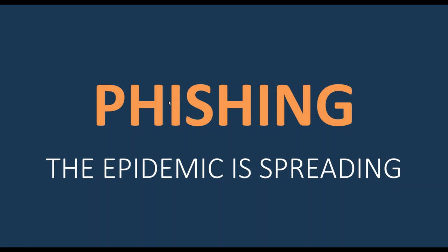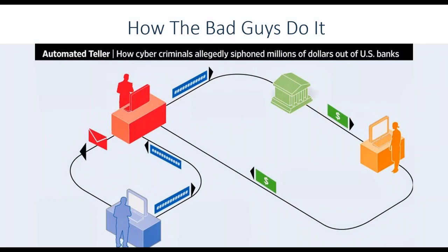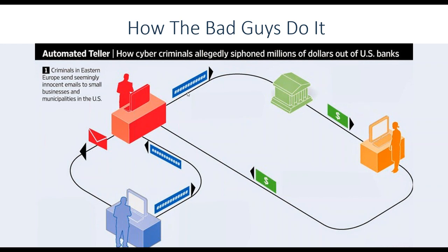Phishing is a constantly spreading epidemic. Here's just one example from the Wall Street Journal of how the bad guys do it. This is kind of one example of a phishing scam — it doesn't necessarily align with every type, but this is one way in which a cyber criminal might exploit money. First, some kind of seemingly innocent email is sent to small businesses and municipalities in the United States. Sounds very familiar, you probably see it every day.